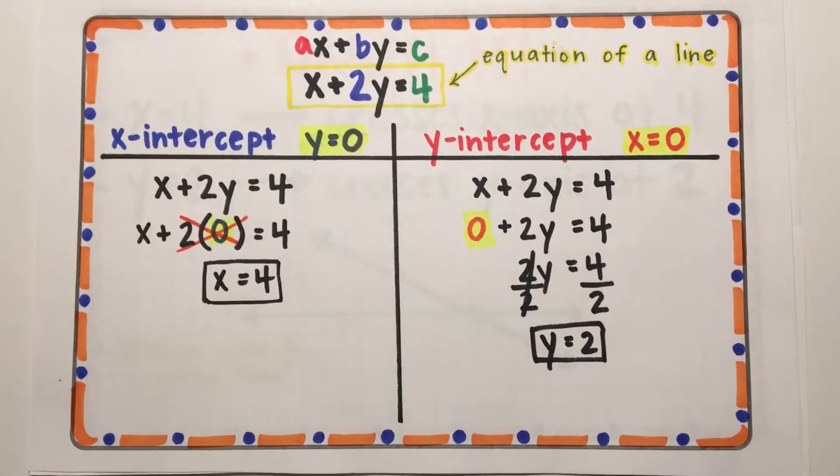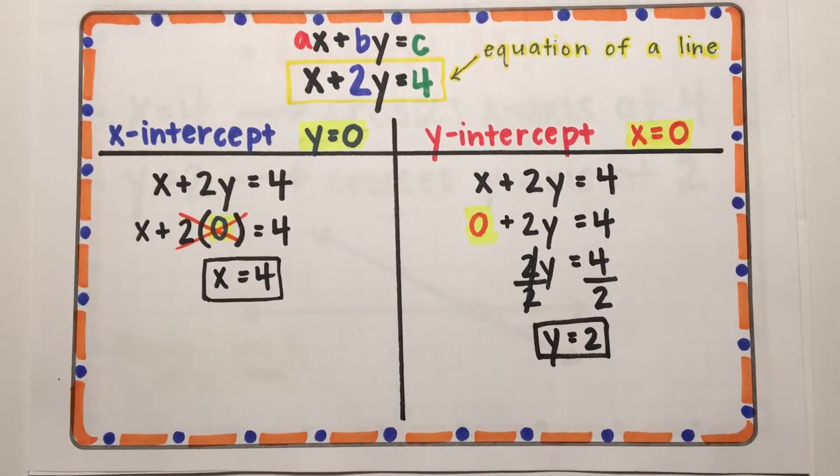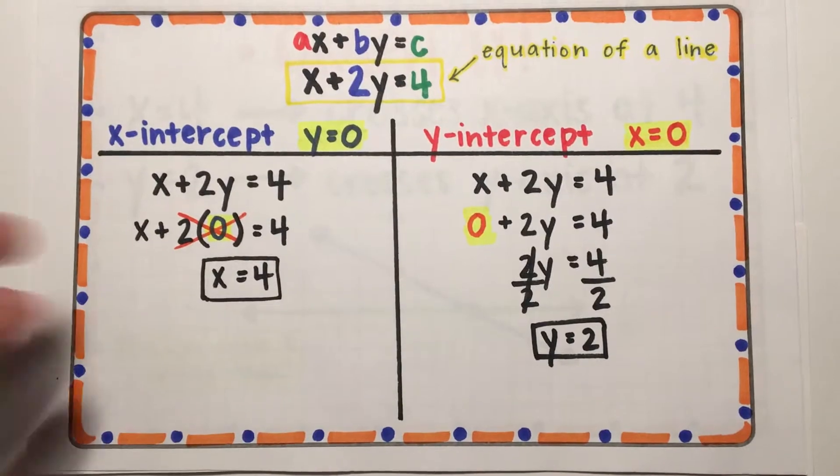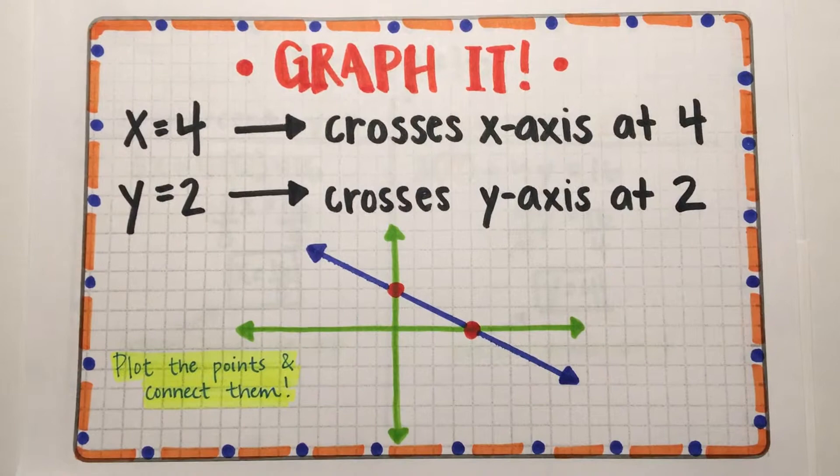For the y-intercept on the right side, I replaced x with 0, and then divide by 2 on both sides. So y equals 2. Almost done. Now it's time to graph it. This is the fun part.